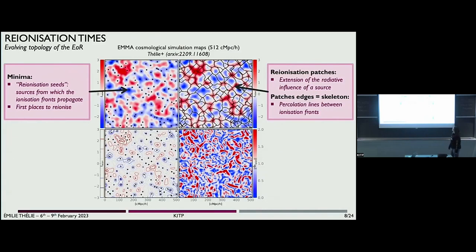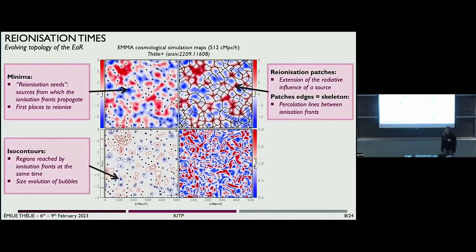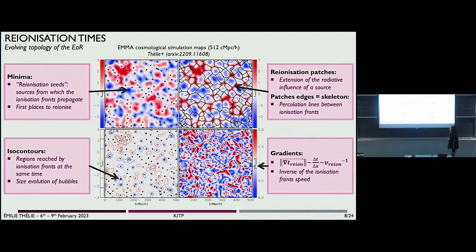The edge of these patches is called the skeleton, and it has information about the percolation lines between the reionization fronts. You can also trace the iso-contours of this map, which are regions reached by the de-ionization front at the same time and which have information about the size evolution of bubbles. If you derive this map, you have something proportional to the inverse of the de-ionization front speed.